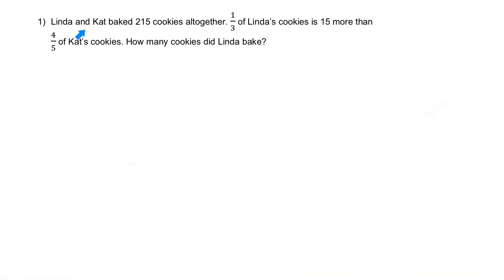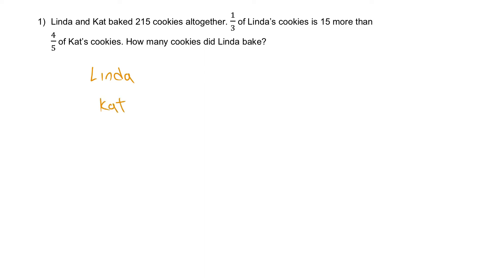Question 1: Linda and Kate baked 215 cookies altogether. A third of Linda's cookies is 15 more than four-fifths of Kate's cookies. How many cookies did Linda bake? We're going to draw out the model sentence by sentence. Starting with the first sentence, Linda and Kate baked 215 cookies altogether, so we have two people — Linda and Kate — and in total they have 215 cookies.